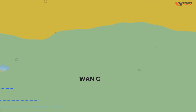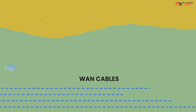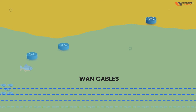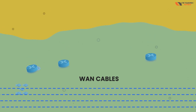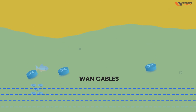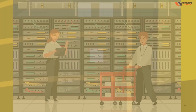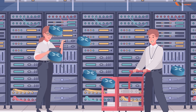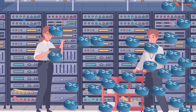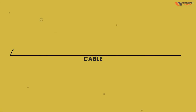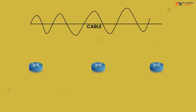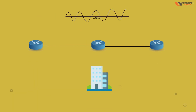The cables placed between routers are normally WAN cables. Some cables are even undersea. Big ISPs have lots of routers connected with cables, and these cables provide connections to homes, offices, and everything else.